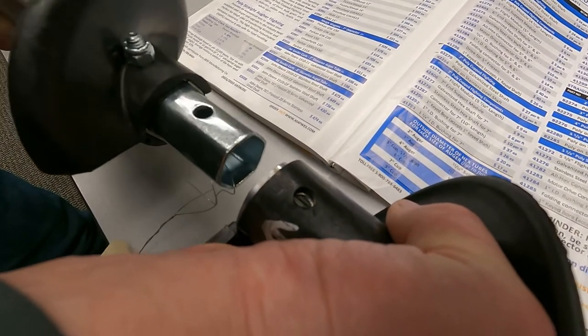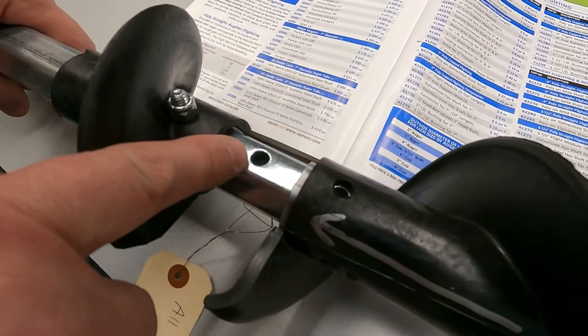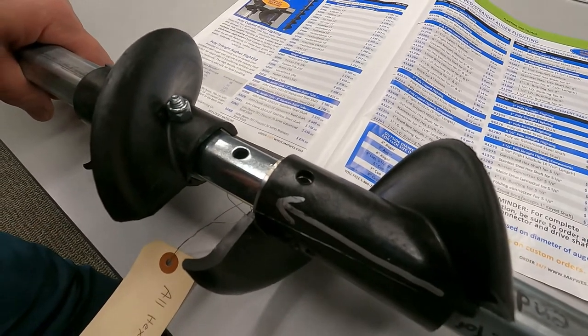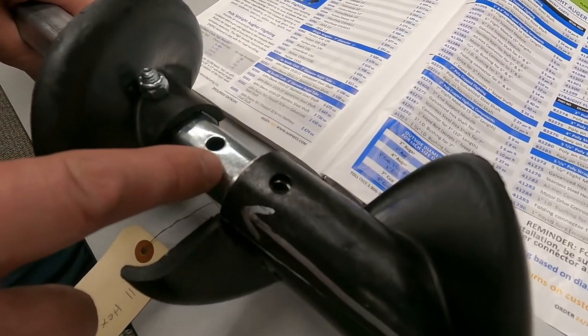For every ten feet of auger, you will need to order an all-hex connector. Our augers are shipped in sections to reduce shipping costs. The connectors are required to assemble the sections to the length you need.